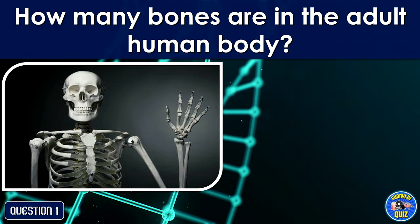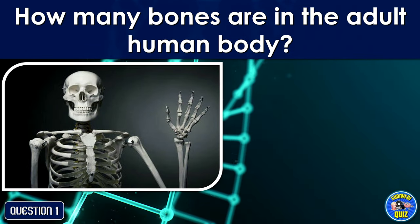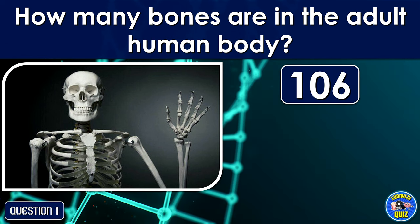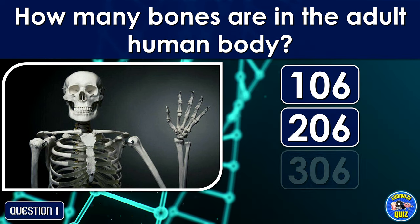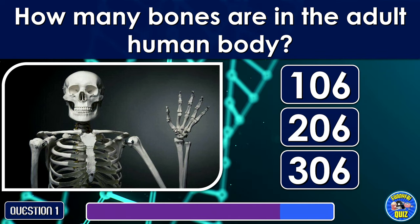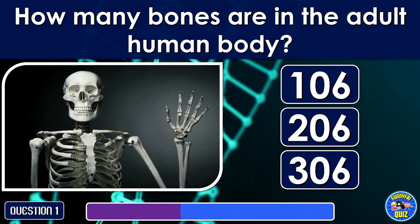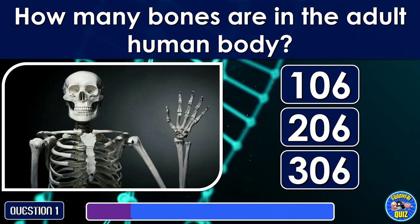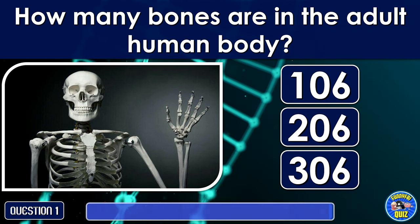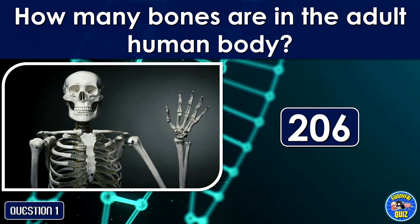How many bones are in the adult human body? 206.